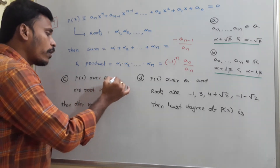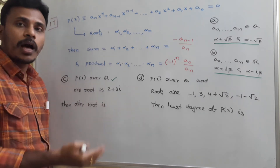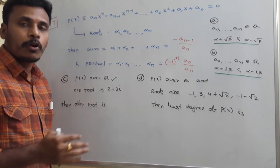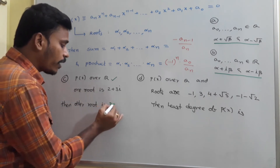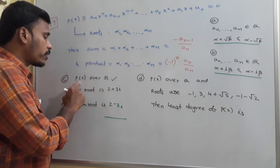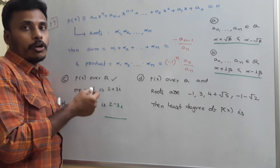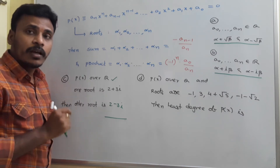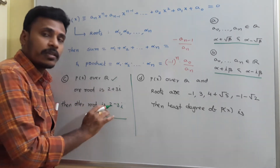If P(x) is a polynomial over real numbers and one root is 2+3i, then since the polynomial is over reals, for sure we get another root as 2-3i. The phrase 'polynomial over reals' means all the coefficients aₙ, aₙ₋₁, and so on are real numbers. So if one root is 2+3i and the other root is 2-3i, there ends the situation.